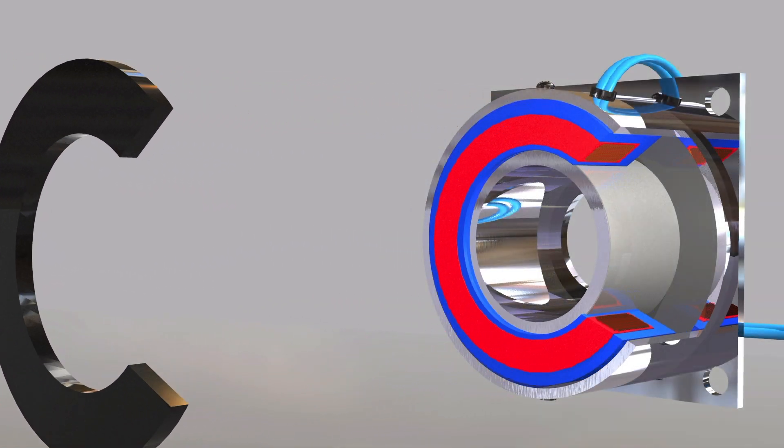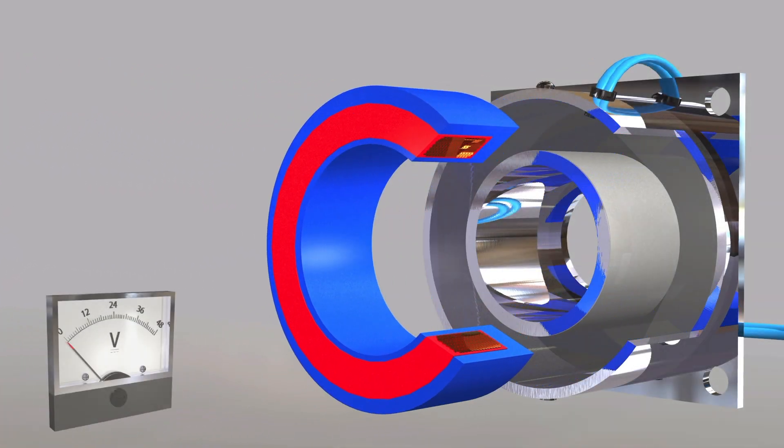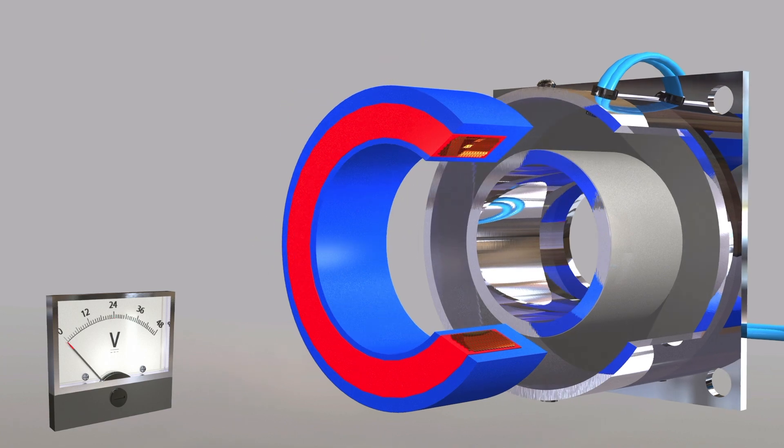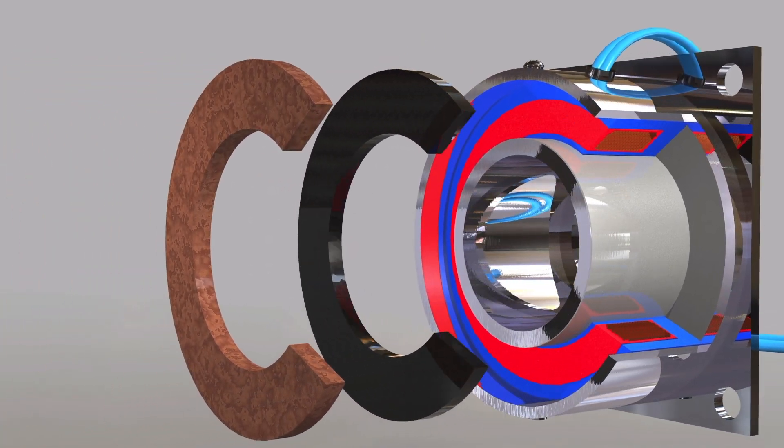Electromagnetic brakes operate via an electric actuation, but produce torque mechanically. When voltage or current is applied to the brake, the coil becomes an electromagnet and produces magnetic lines of flux.